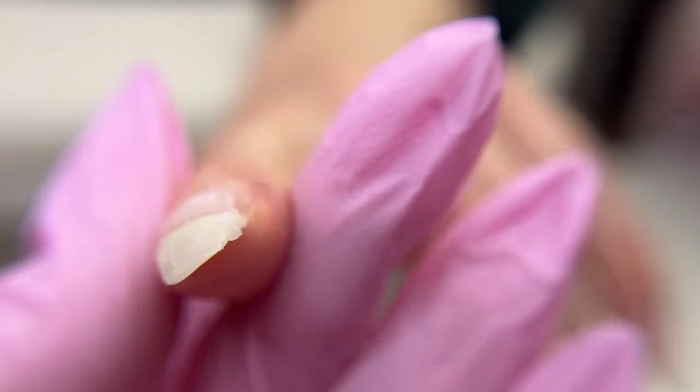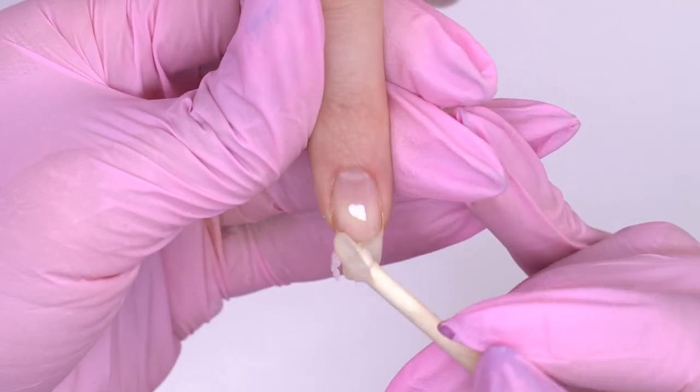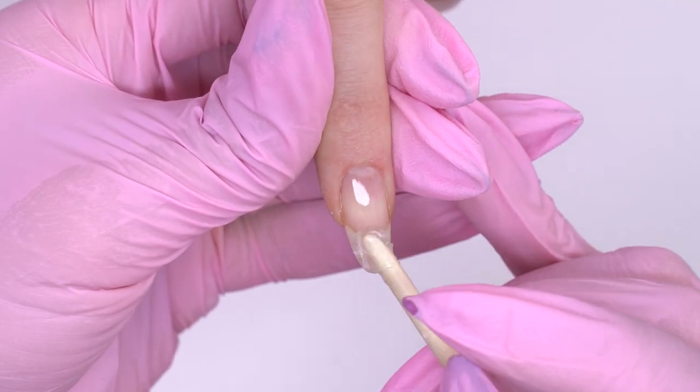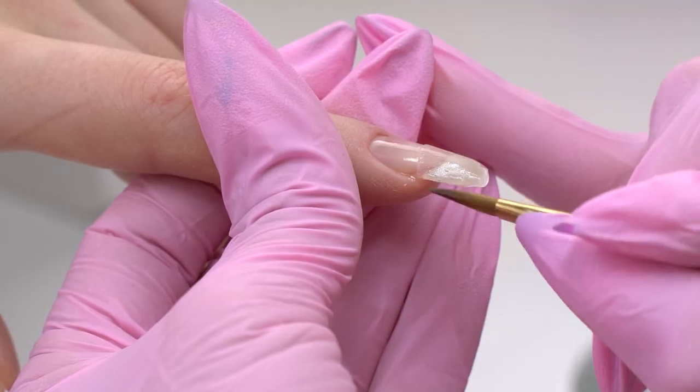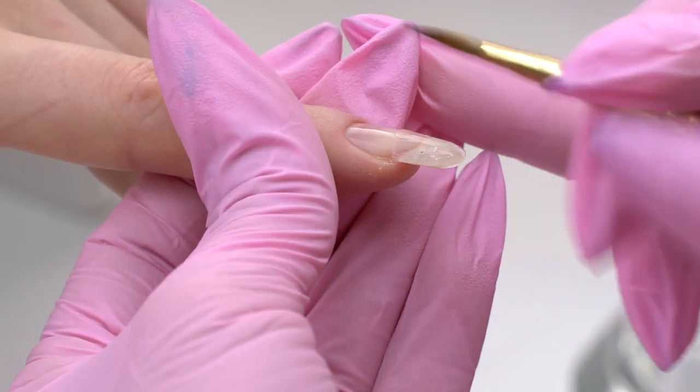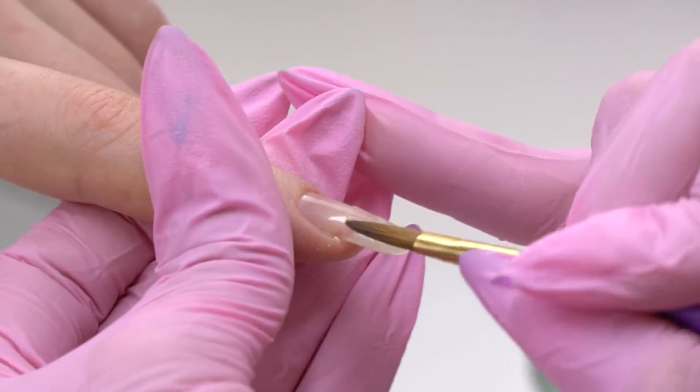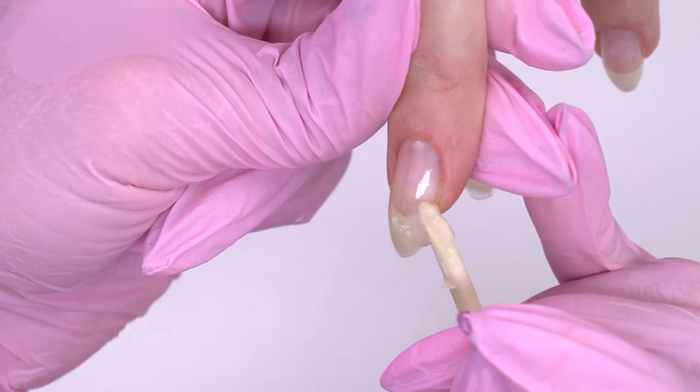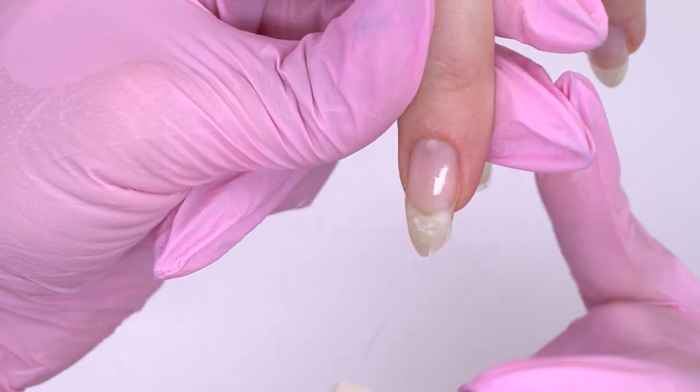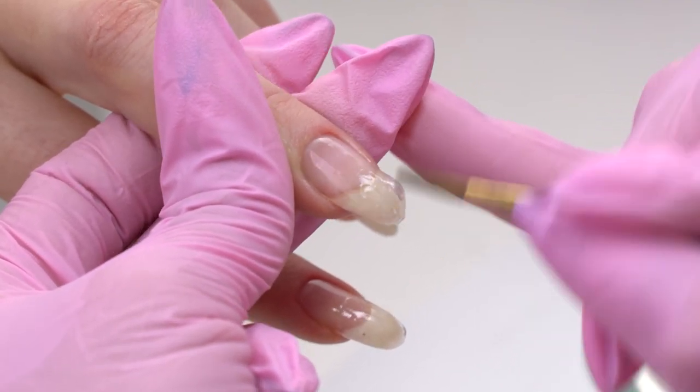Index nails often grow downwards, so we need to lift up the curved tip. I'm using the same clear acrygel. I build up the missing sidewall on the middle nail. This repair stage won't take too much time, but the nails will look absolutely different.